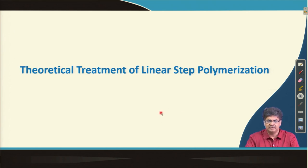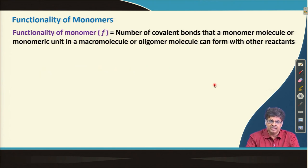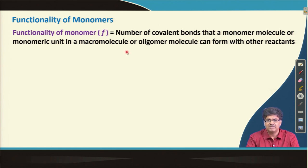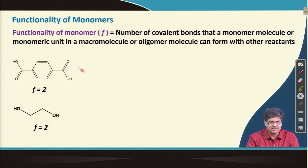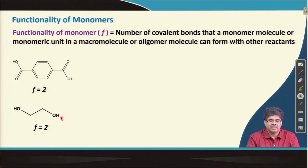Let us now move to the theoretical treatment of linear step polymerization. Before that we need to define the functionality of monomers, typically expressed as F. The functionality F is defined as the number of covalent bonds that a monomer can form. For example, terephthalic acid can form two bonds — one on each side reacting with an alcohol or amine group — so its functionality is 2. Similarly, a diol can react on two sides, so its functionality is also 2.